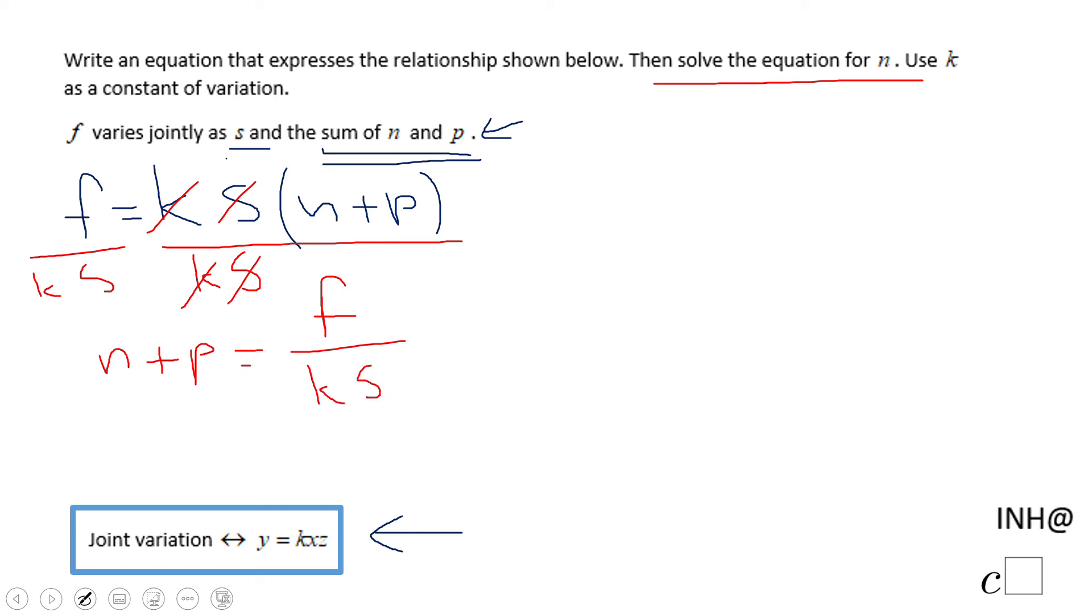Let's write the right side: equals F over K S. And now we really need to solve for N, so we're going to subtract P on both sides.